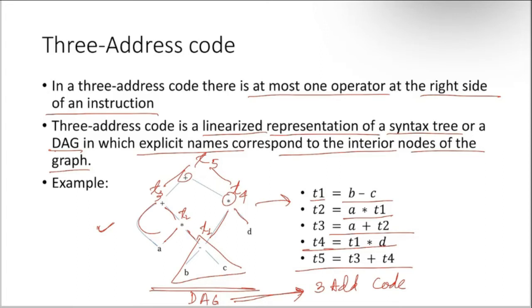It's very simple. If you have a DAG, you can construct three-address code without making any mistakes. The only thing is that you have to assign these temporary variables.